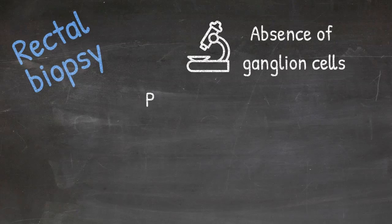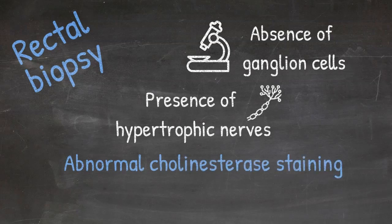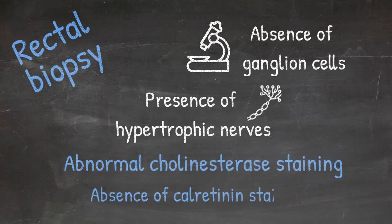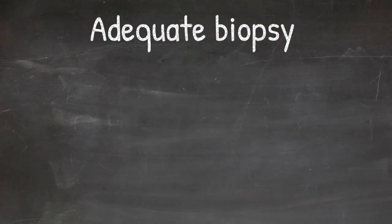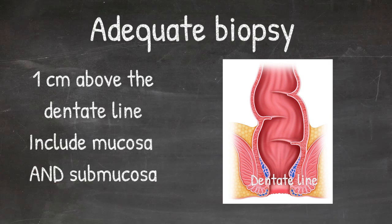So what are the buzzwords on the pathology report that would make us think this is Hirschsprung disease? Typical features on the biopsy include absence of ganglion cells, presence of hypertrophic nerves, abnormal pattern of cholinesterase staining, and an absence of calretinin staining. To be considered an adequate biopsy, it must be taken from the rectum at least one centimeter above the dentate line and must include both mucosa and submucosal layers.